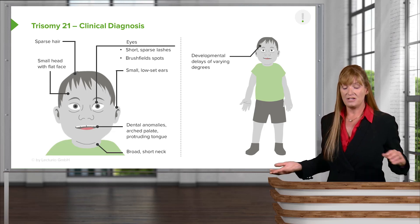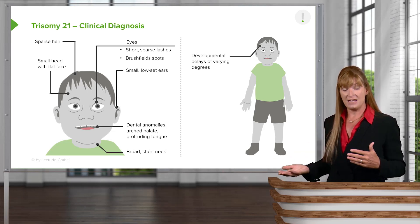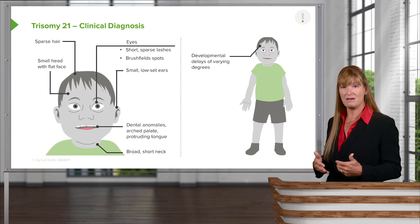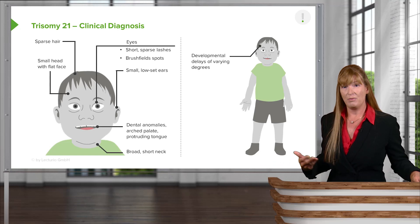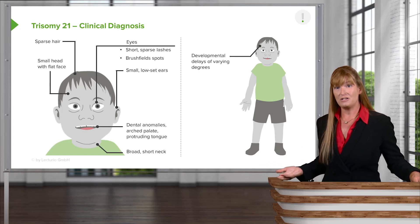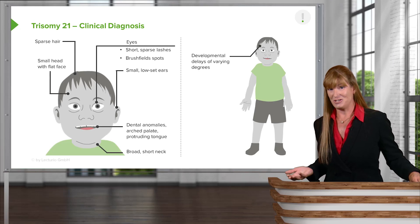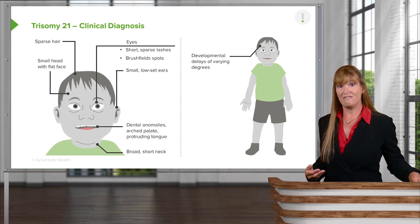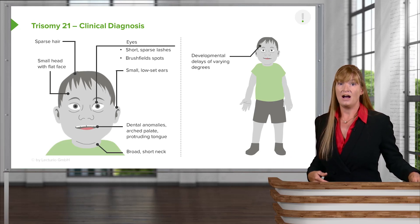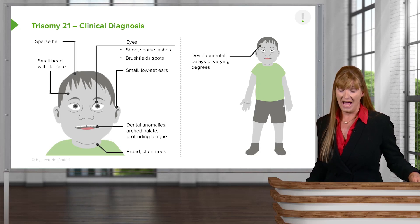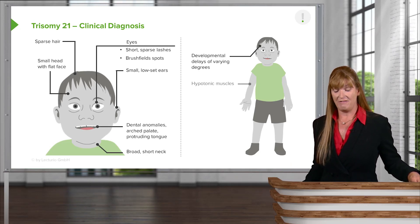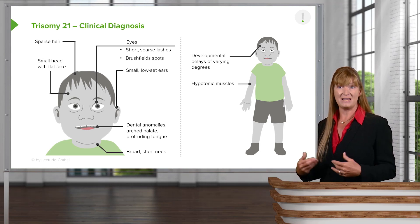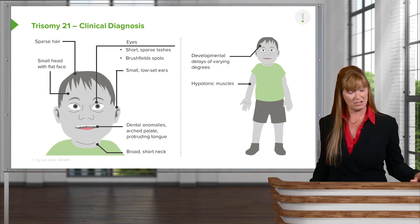Developmental delays are fairly varied in Down syndrome — it might be fairly extreme or fairly mild — and we're not entirely sure why that is. Many conditions are multifactorial, so perhaps environment and nutrition have an impact. Down syndrome patients also have hypotonic muscles, meaning they don't develop full contraction strength.